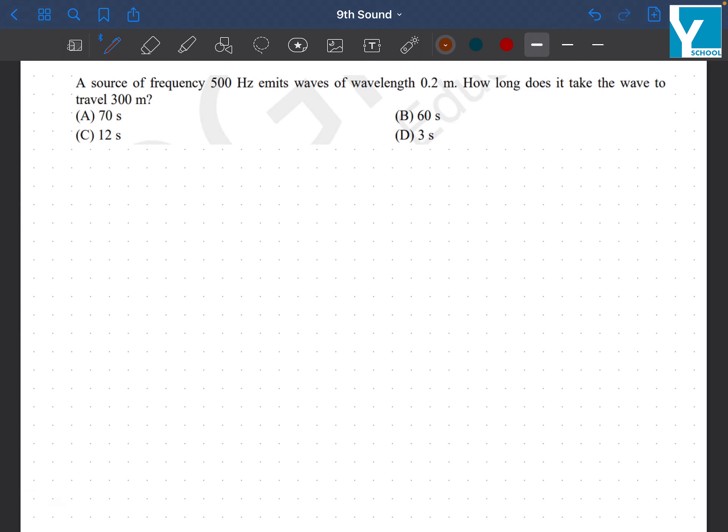A source of frequency 500 Hertz emits waves of wavelength 0.2 meters. So we have frequency which can be written as nu equals 500 Hertz, and wavelength 0.2 meters.